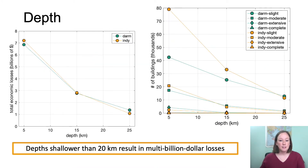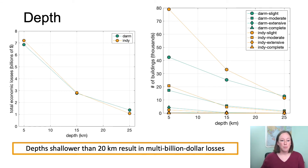The next parameter was depth, which has an inverse relationship to magnitude. As depth increases, economic losses and building damage decrease. Depths shallower than about 20 kilometers result in multi-billion dollar losses, so these shallow events are far more hazardous than mid-crustal events.